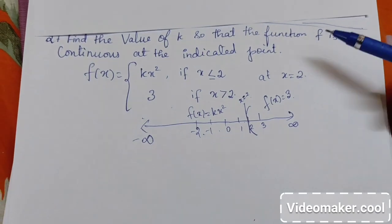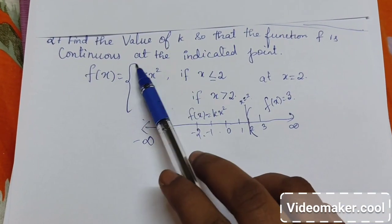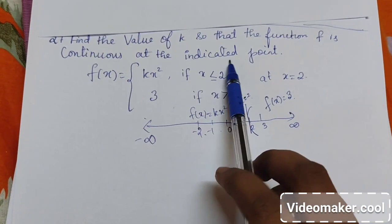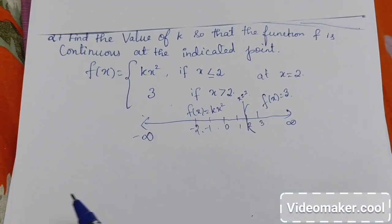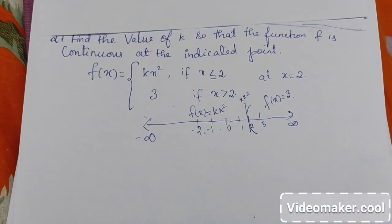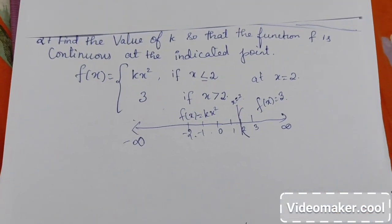Now we have to check for the value of k so that the function is continuous at x equal to 2. So we will assume the function is continuous at 2.